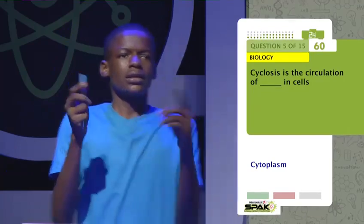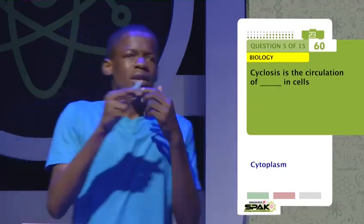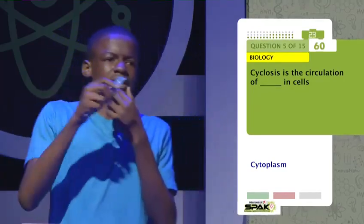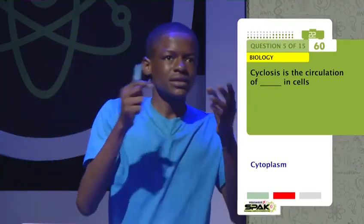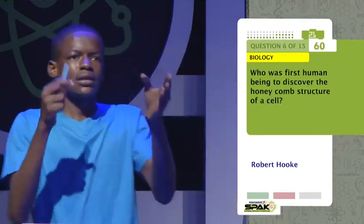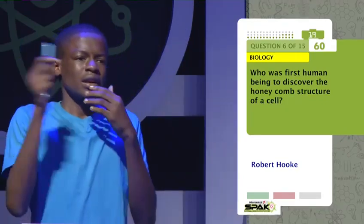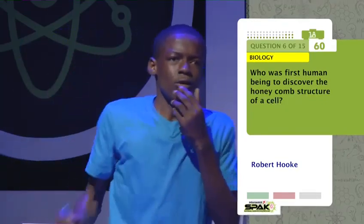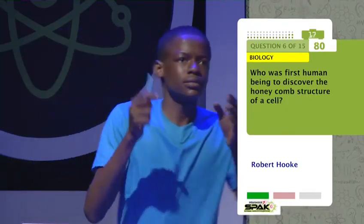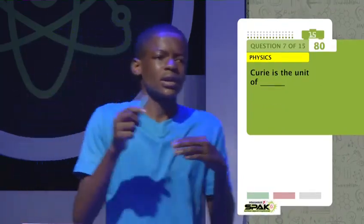Cyclosis is the circulation of what in cells? Who was the first human being to discover the honeycomb structure of a cell? Urubatu. Curie is the unit of?